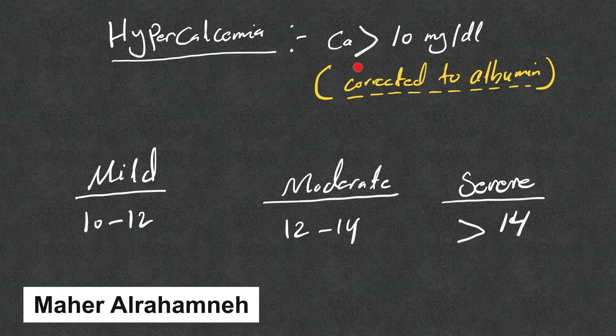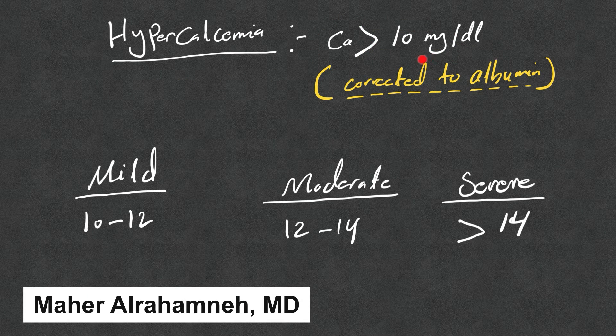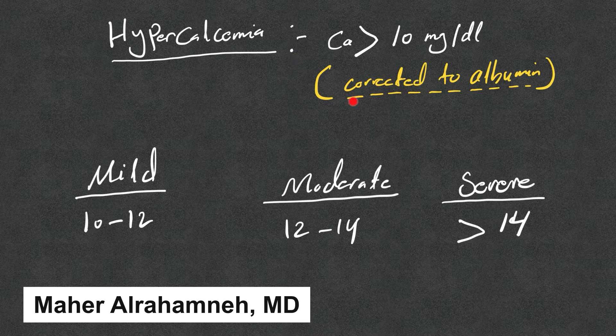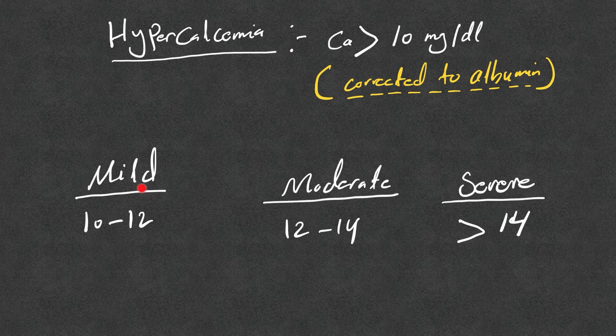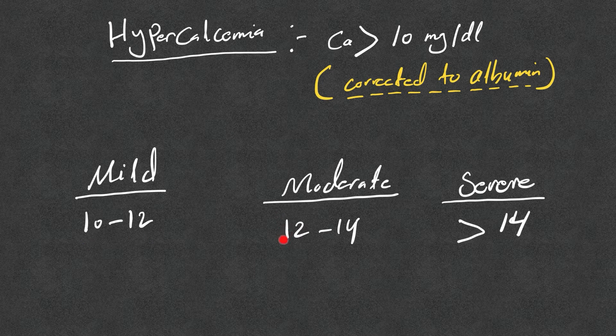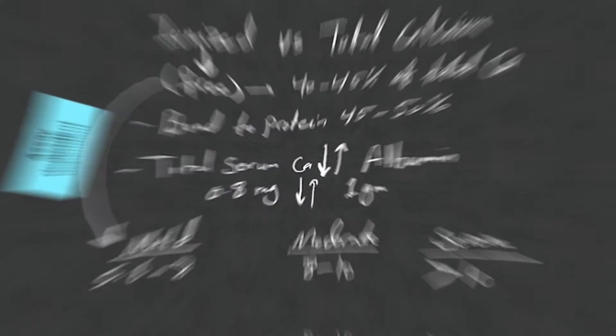Hypercalcemia is calcium level above 10 milligrams per deciliter, and this is the total calcium corrected to albumin. It's categorized based on severity into mild 10 to 12, moderate 12 to 14, and above 14 as severe.